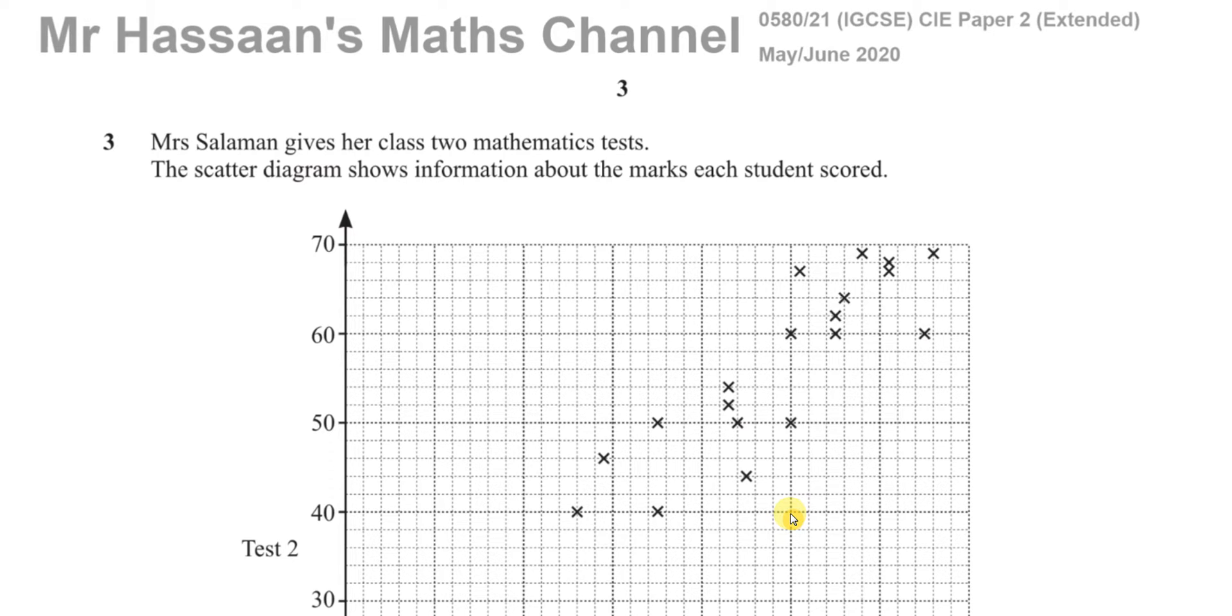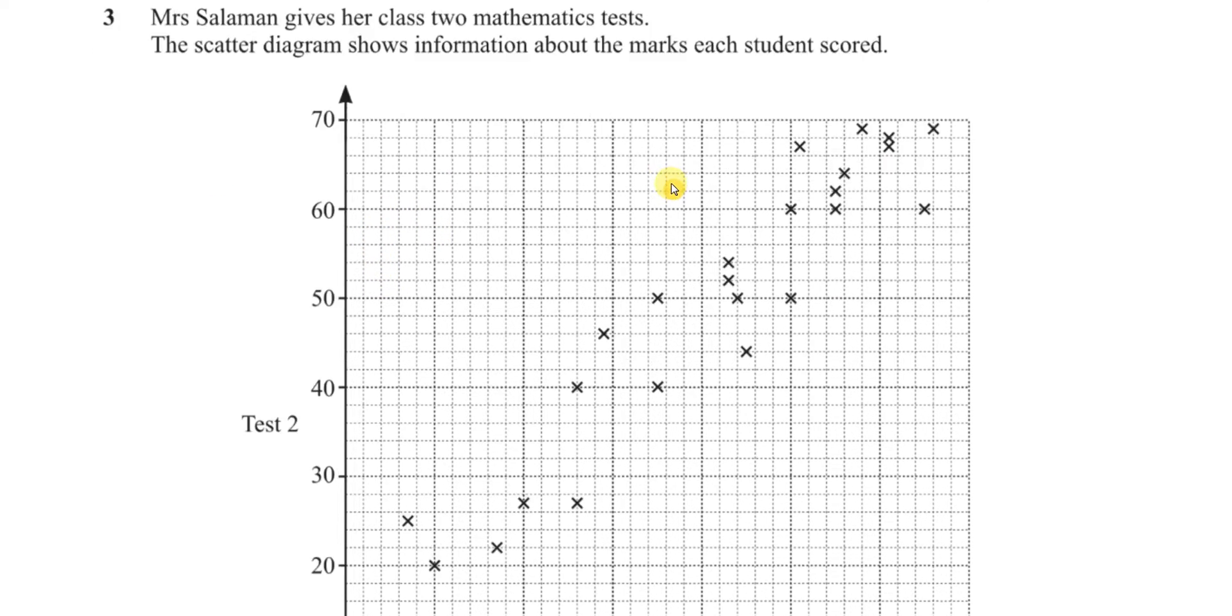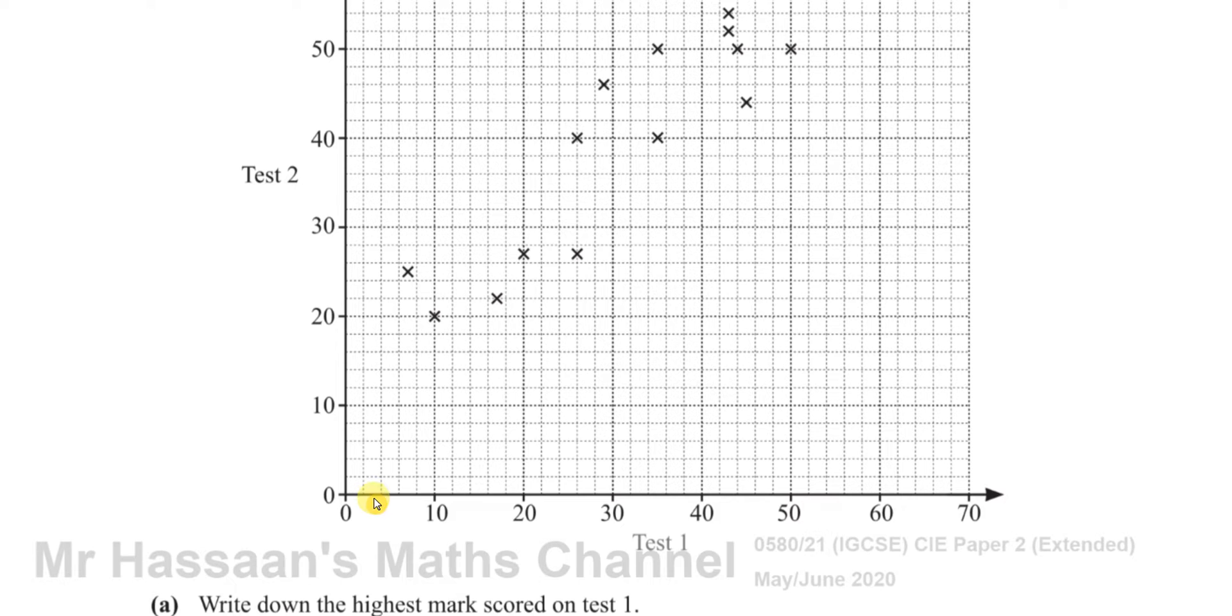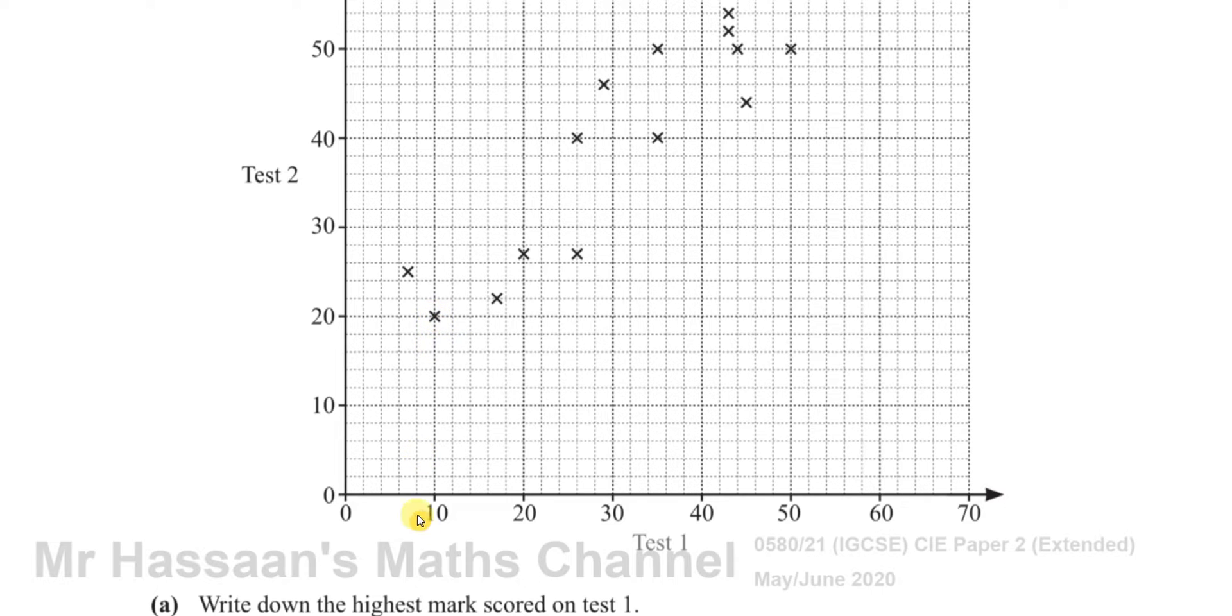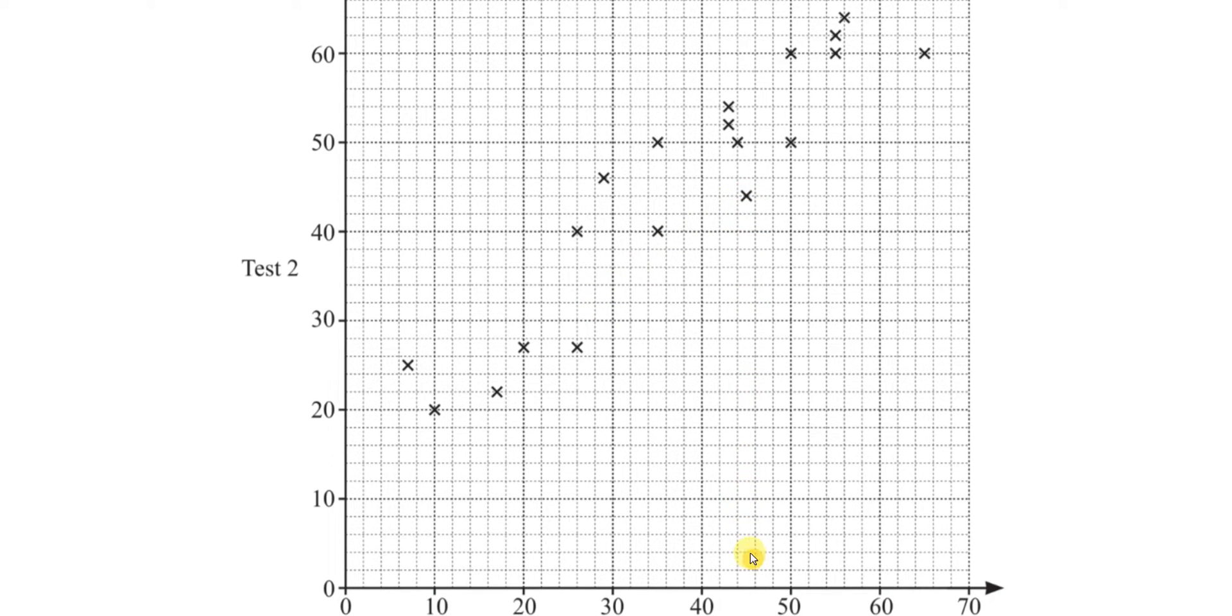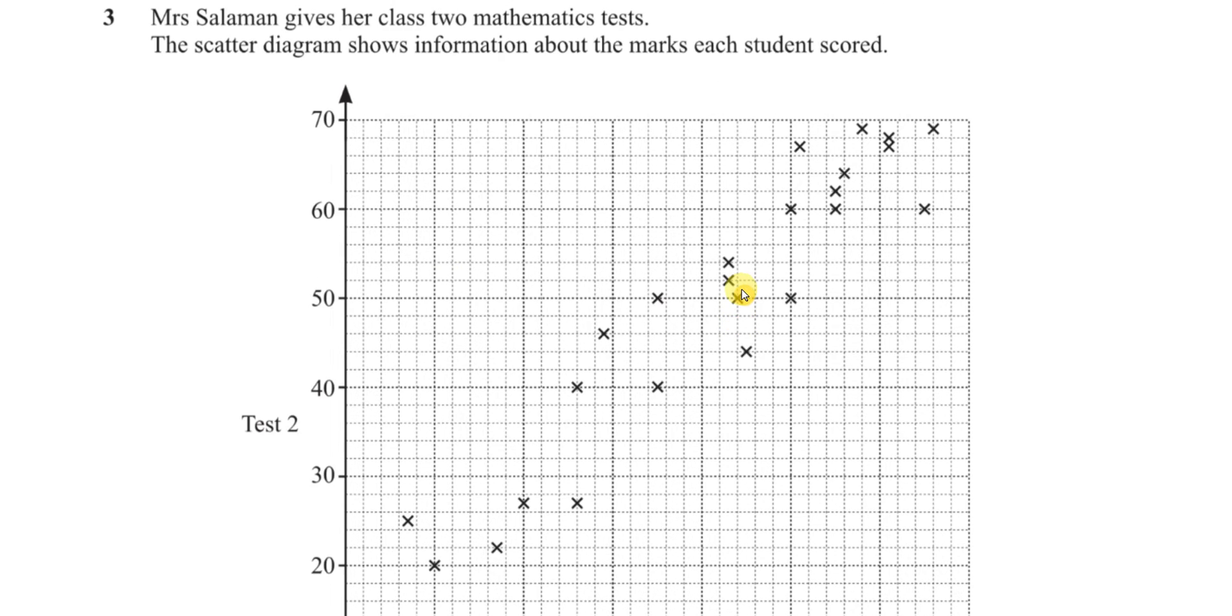Question number three tells us about Mrs. Salaman, who gives her class two math tests. The scatter diagram shows information about marks from each student. On the x-axis here, I recorded the marks for test 1 and test 2 on the y-axis. For example, this would be the mark that one student got for test 1 and that same student got this mark for test 2. That would be a particular student's mark for test 1 and the same student's mark for test 2, and so on.